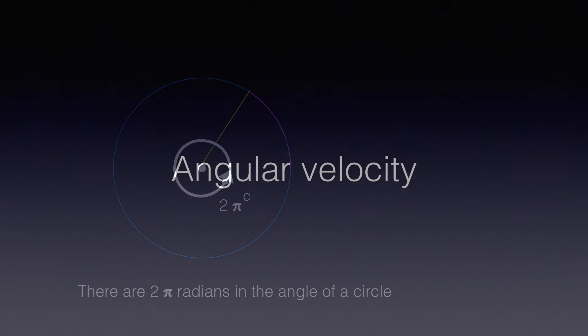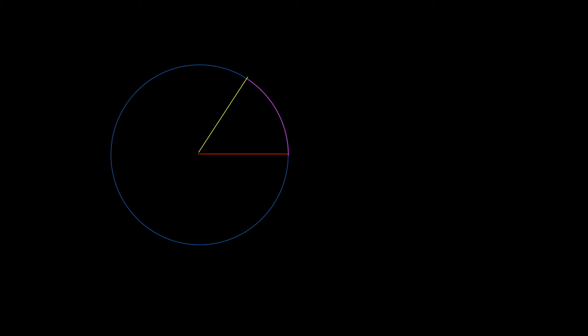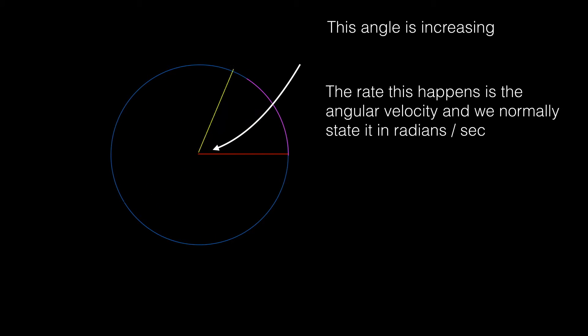Let's go to the third concept and look at angular velocity. Returning to our circle with one cheese slice of one radian, if we turn one of the radiuses round, we can see that this angle is constantly increasing. The rate this happens is the angular velocity, normally stated in radians per second. It's constantly increasing because even after it goes past 360, we think of it as going 360, 720, etc.